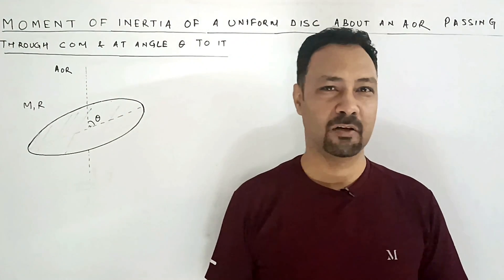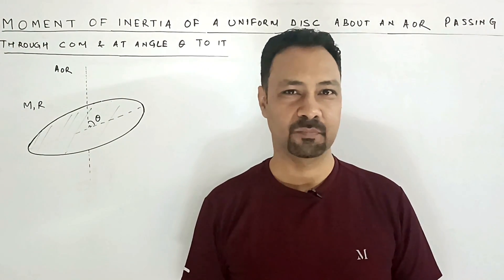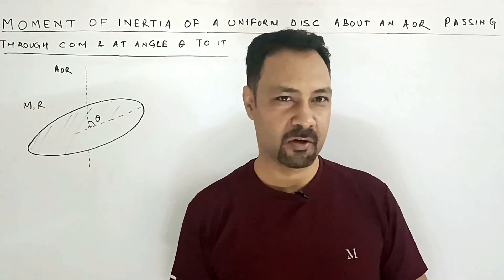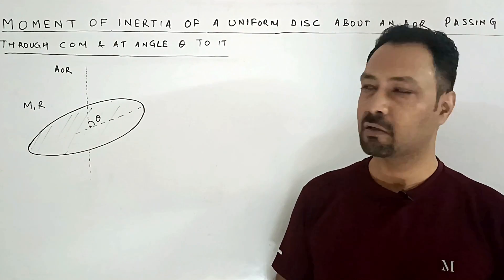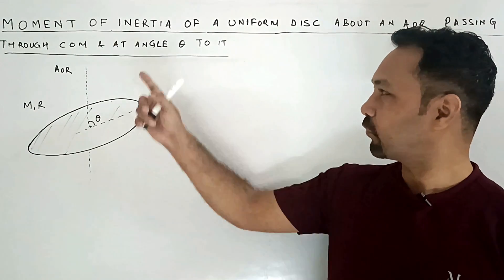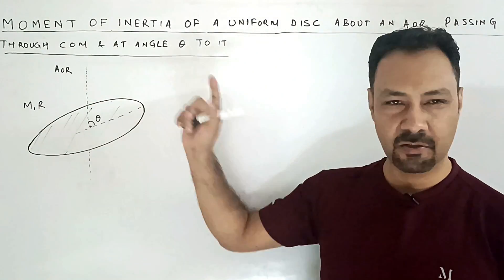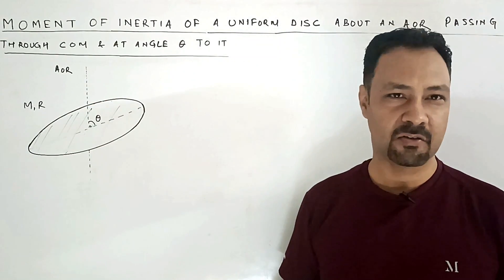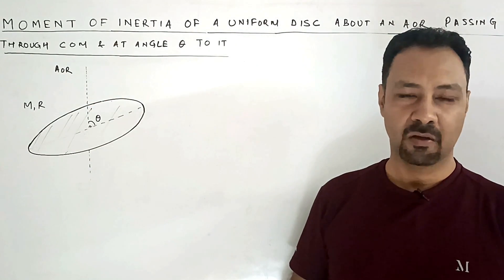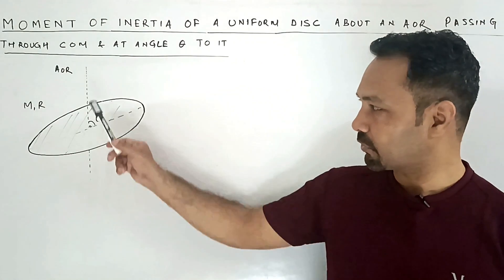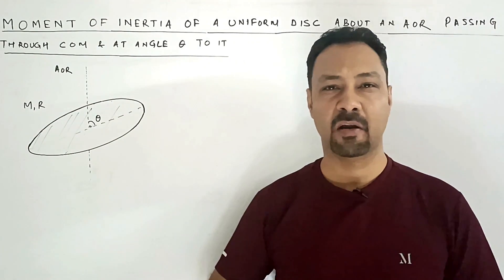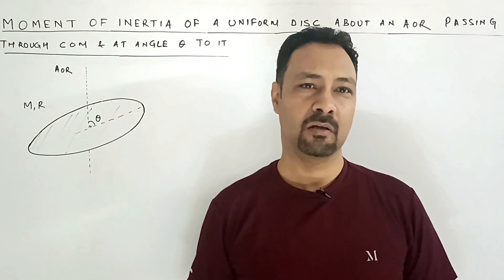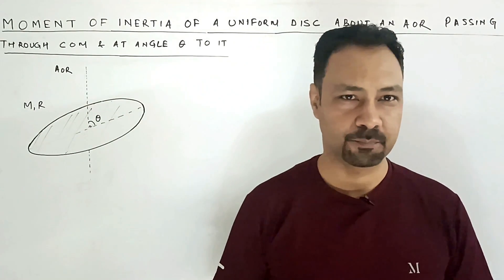Hello all, and welcome to QuantumGuru. Let's look at this very good question of the moment of inertia of a uniform circular disk of mass m and radius r, where the axis of rotation passes through the center of mass but at an angle theta.